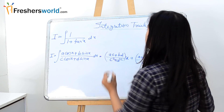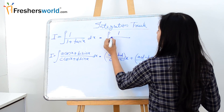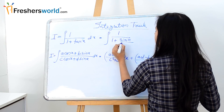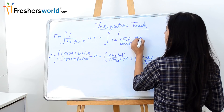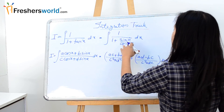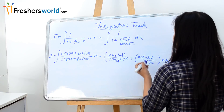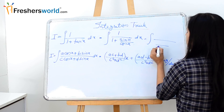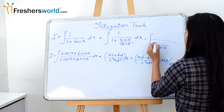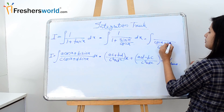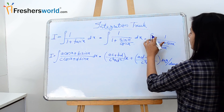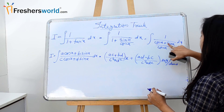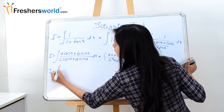So we simplify 1 / (1 + sin x / cos x). Taking LCM, this becomes cos x / (cos x + sin x). So we can rewrite the integral as integration of cos x / (cos x + sin x) dx.